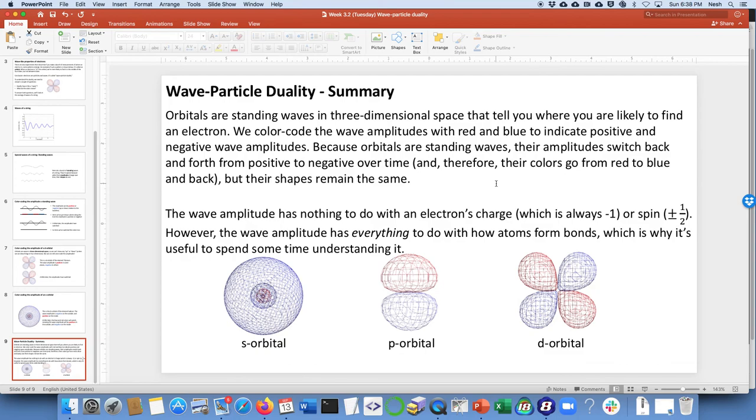Just a little caveat: the wave amplitude has nothing to do with an electron's charge, which is always minus one, and it has nothing to do with its spin, which is either plus or minus one-half quantum number. However, the wave amplitude has everything to do with how atoms form bonds, which is why it's useful for us to spend some time understanding it.